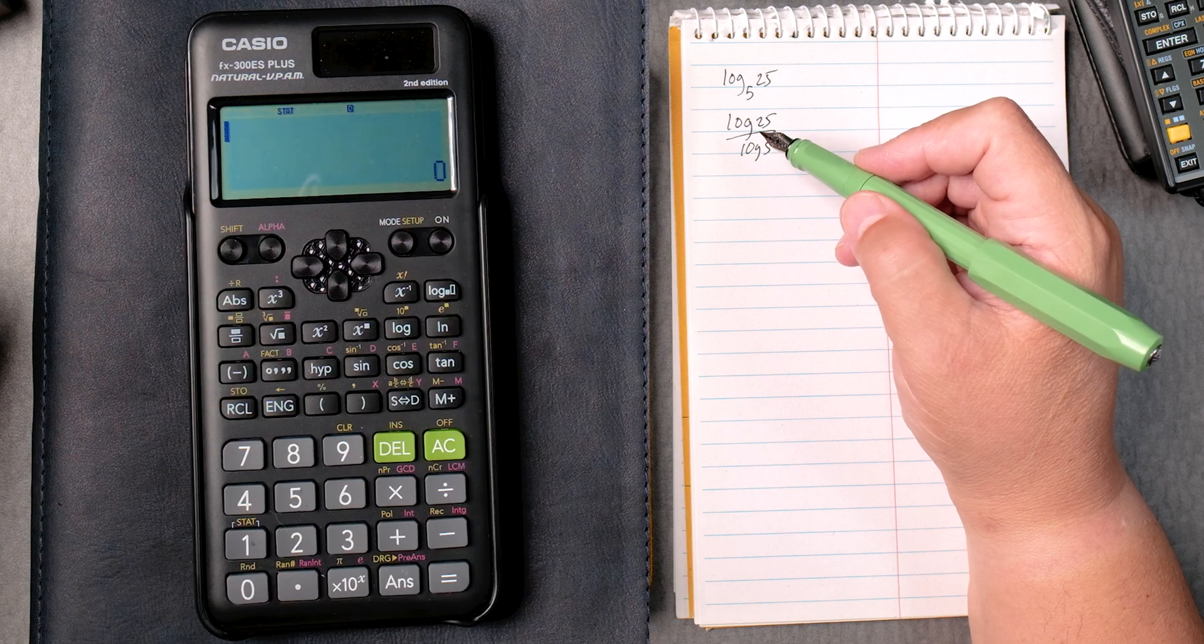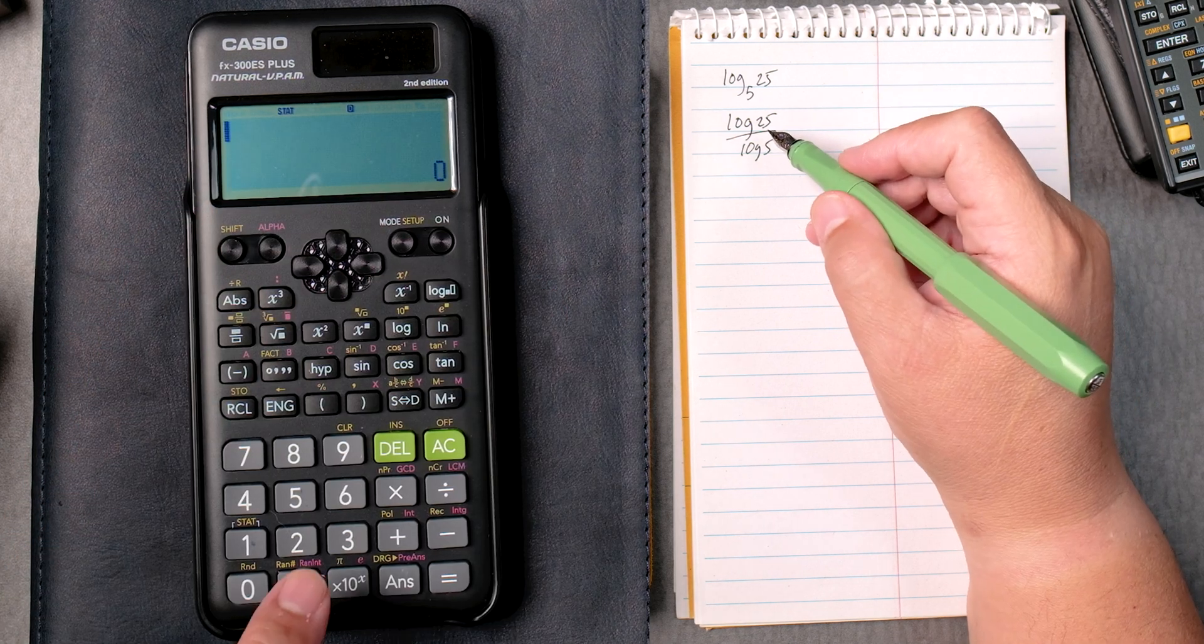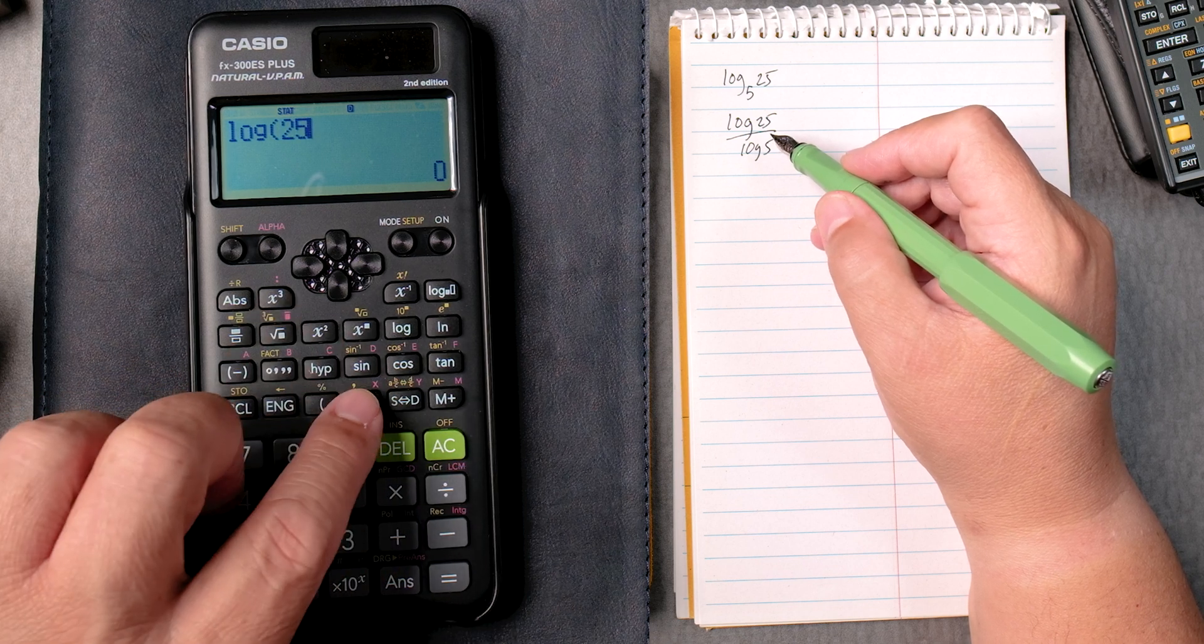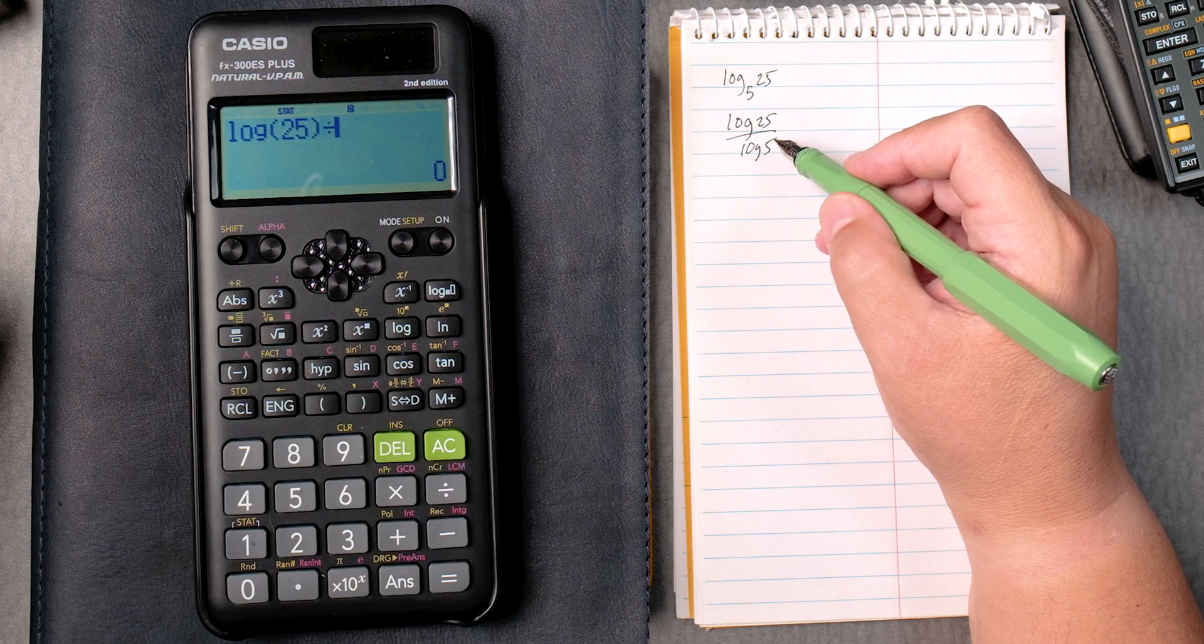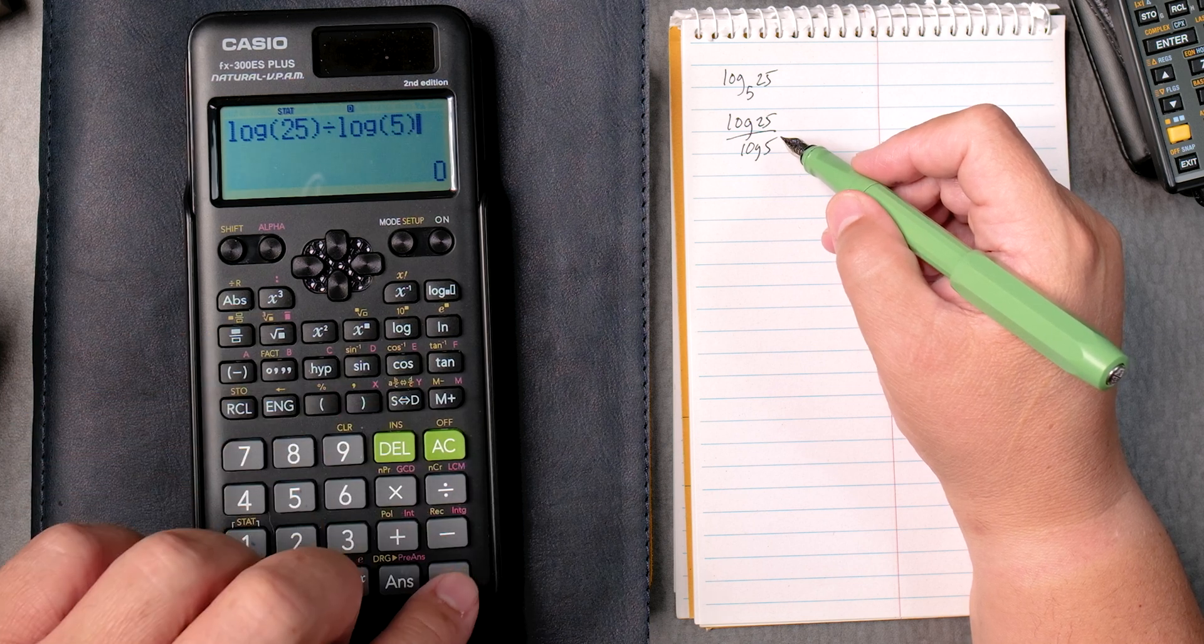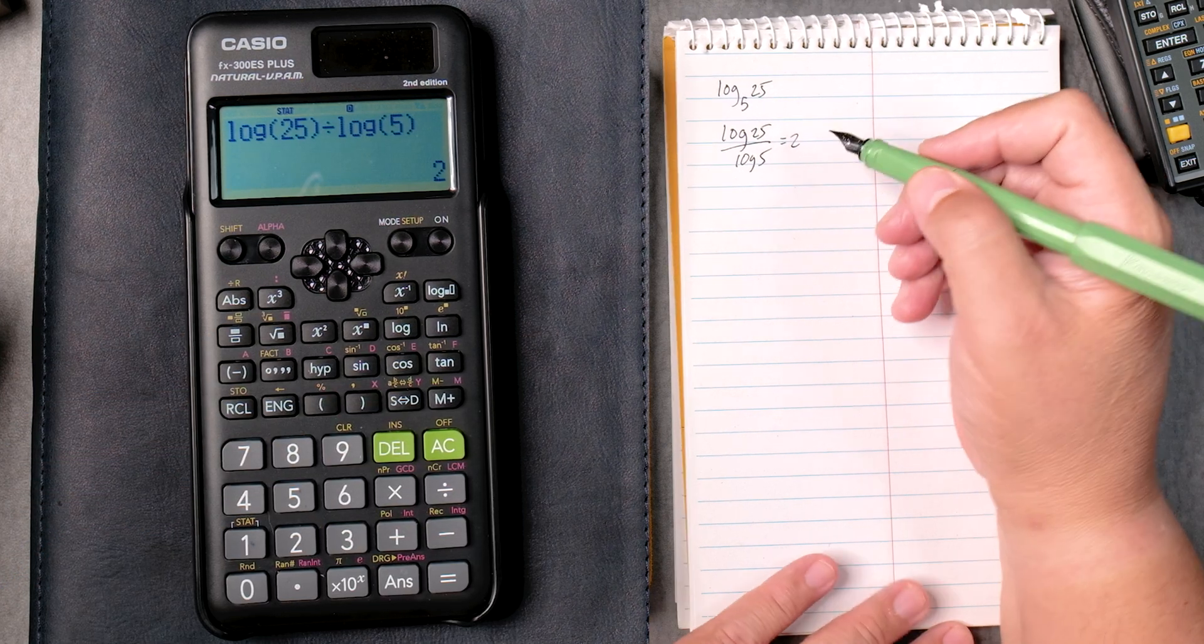Okay, so let's turn on the calculator here. We're going to press log, then 25, and then close it, and then divide, and then the log of 5, and you can close it if you like, equals 2. Perfect.